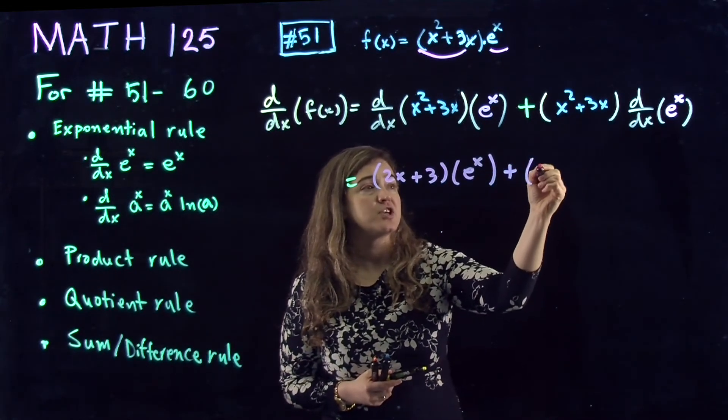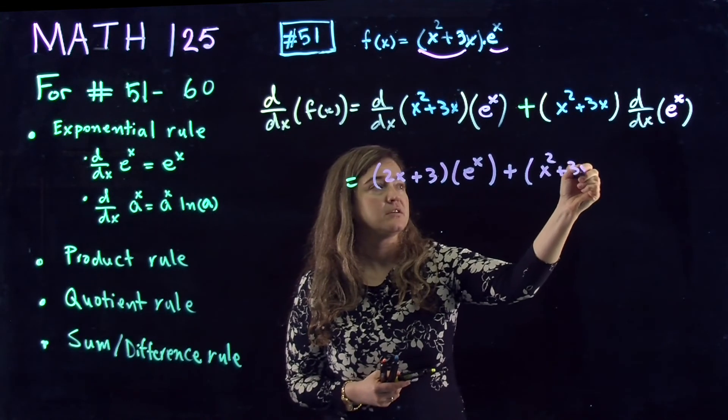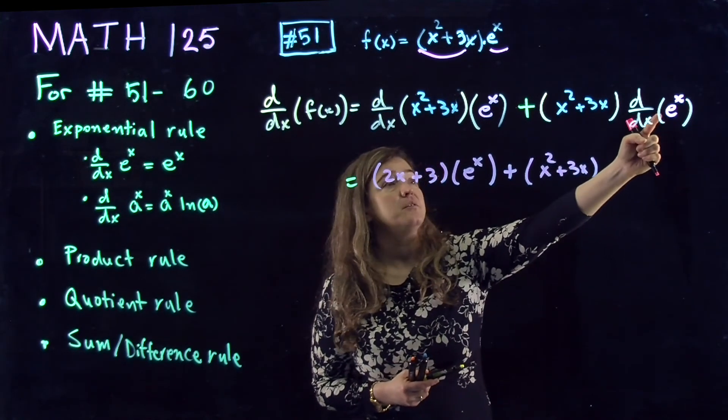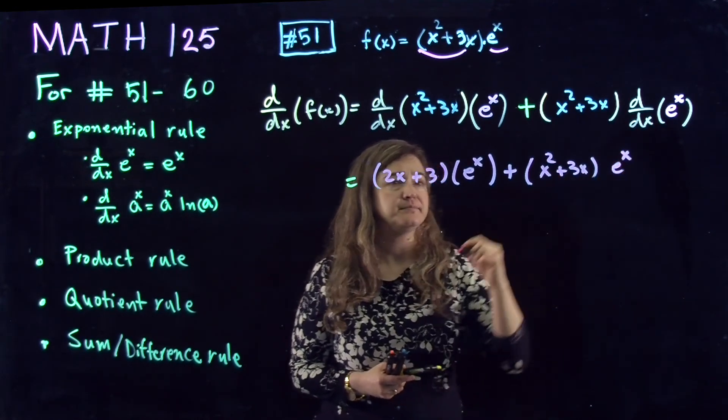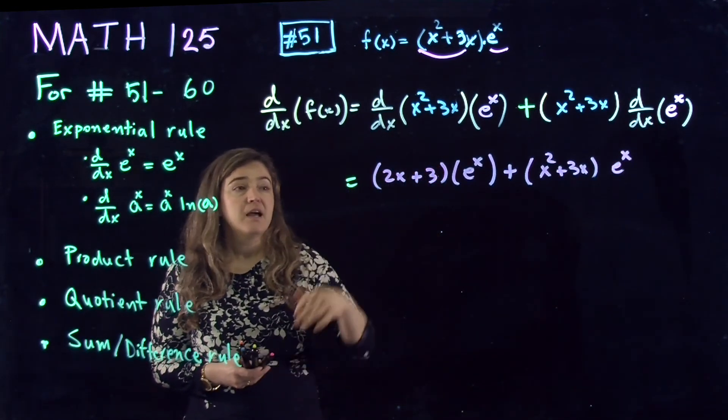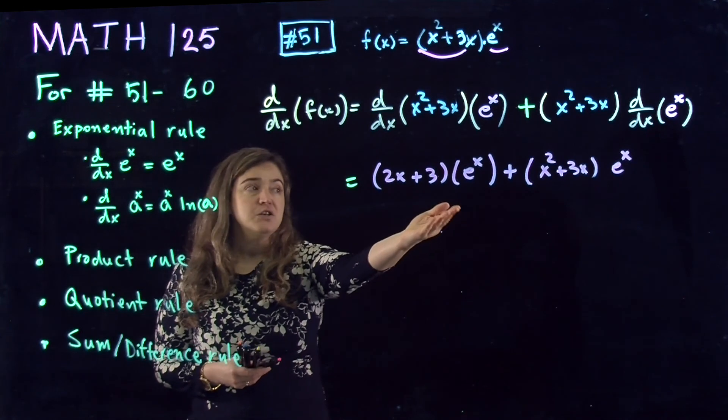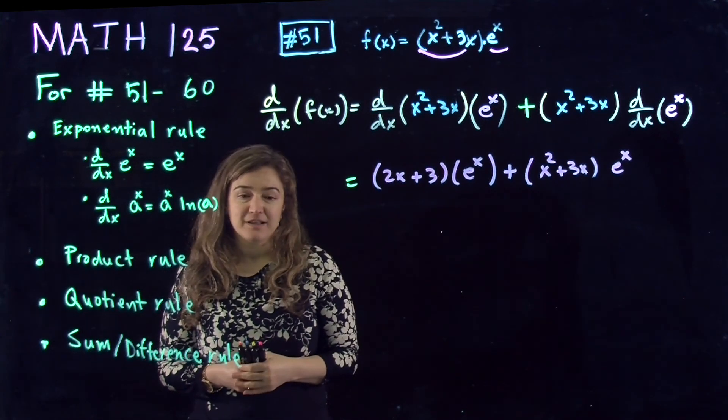The first function unchanged times the derivative of the second function, which derivative of e to the x is going to be e to the x itself. And we're done. No need to simplify further than this.